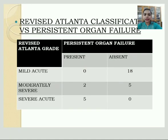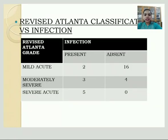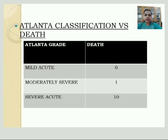Regarding Revised Atlanta Classification versus organ failure: organ failure was absent in all mild acute cases. In moderately severe cases, 2 had persistent organ failure and 5 did not. Five severe acute cases had organ failure. Regarding infection, out of 18 mild acute cases, 2 had infection; in moderately severe cases, 3 had infection; and in severe acute cases, 5 had infection. Regarding deaths, no deaths were reported in mild acute, 1 death in moderately severe, and 10 deaths in severe acute category.